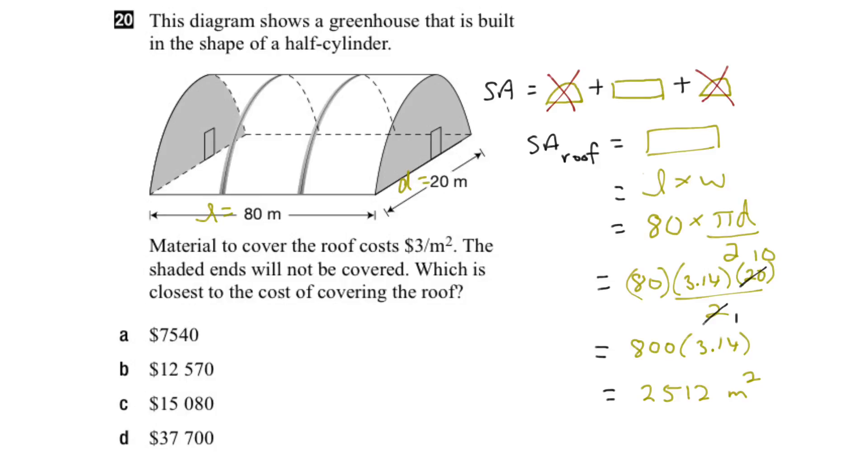But we're not quite done yet. We need to find the cost of covering the roof. So the cost would equal the 3 dollars per meter squared times the area of the roof, which is 2,512 meters squared.